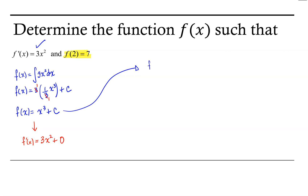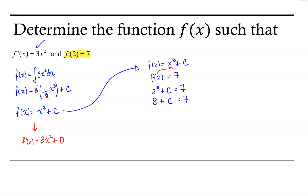So f of x equals x cubed plus c, and what we want is that f at 2 is equal to 7. So let's go ahead and replace x in our function with 2. We would have 2 cubed plus c equals 7. And 2 cubed is 8.